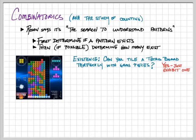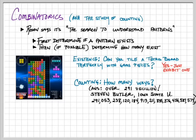Now I'm going to ask how many different perfect tilings of a Tetris board are there with game pieces? That question ends up being pretty hard. It was answered recently by Stephen Butler and some of his students at Iowa State University, and it ends up being over 291 decillion. That's a big number, and he used beautiful techniques of combinatorics to determine that.